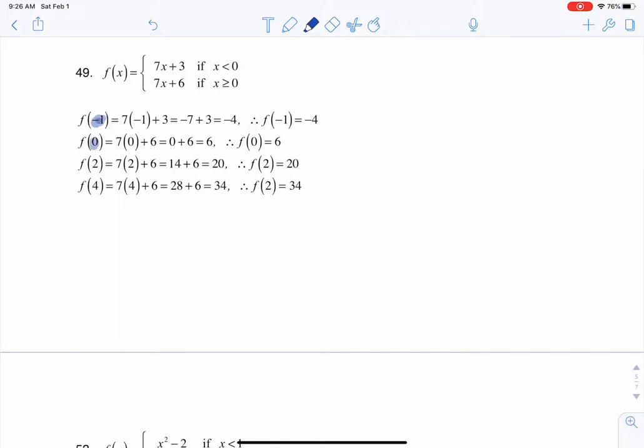So negative 1, 0, 2, and 4. What you have to do when you see this piecewise function is all of these numbers that are in the parentheses, these are x values, and then we just have to decide, based on that x value, do I plug that x value into the top piece or the bottom piece?